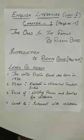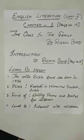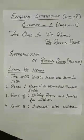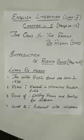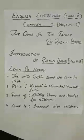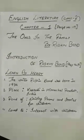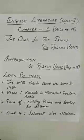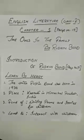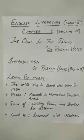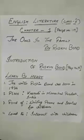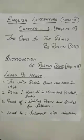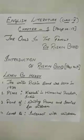Page No. 19 — Learn by Heart. No. 1: The writer Ruskin Bond was born in 1934. No. 2: He lives in Kasauli in Himachal Pradesh, India. No. 3: He is fond of writing poems and stories for children. No. 4: He loved to interact with children.